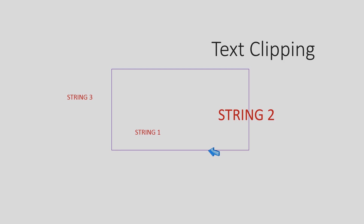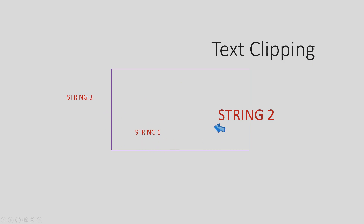Today's video will deal with text clipping and exterior clipping. As the name suggests, this time we are not clipping diagrams or shapes — we are clipping text. This can be done in three forms. We have three example strings: string one which is completely inside the window, string two which has a clash with the window boundary so it is partially inside, and string three which is completely outside the window. String one will be accepted and string three will be rejected.